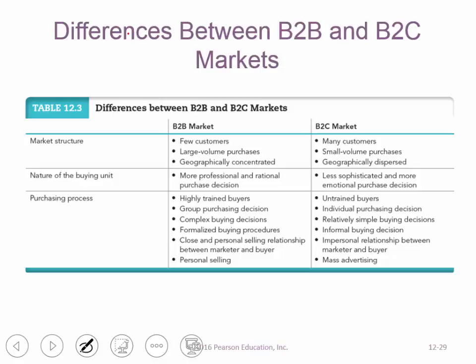Differences between B2B and B2C: B2B is business to business, B2C is business to consumer. In B2B, you have fewer customers but they tend to buy a larger volume — instead of one printer, a business buys a whole network of printers. B2B buyers are more geographically connected, more professional and rational in their purchase decisions, and highly trained. The buying decisions are more complex. In B2C, there are more customers buying smaller volumes, less sophisticated buyers who tend to be one-time purchasers — as opposed to a business with repeated experience buying the same types of items.